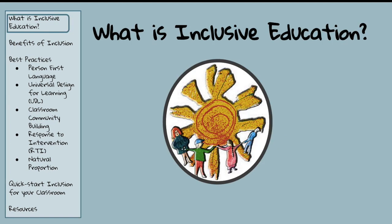So what is an inclusive school? An inclusive school is one in which general education and special education are no longer separate from each other and are completely indistinguishable. The school is restructured so that all students have an opportunity to learn together.